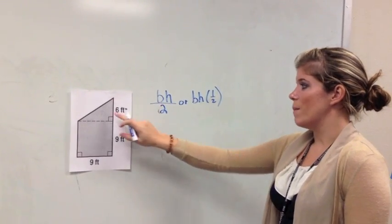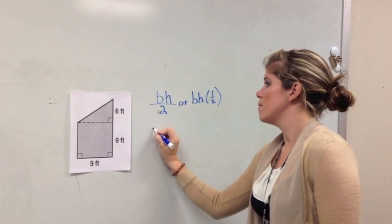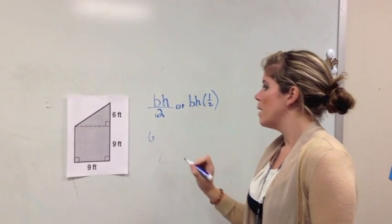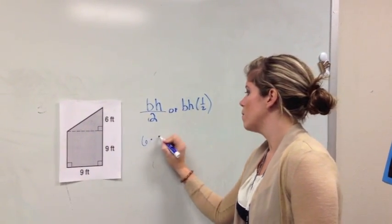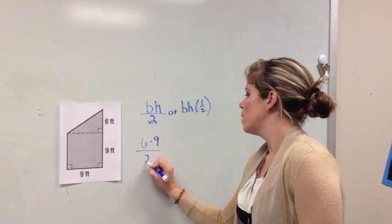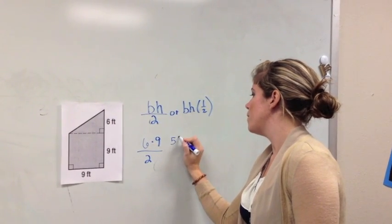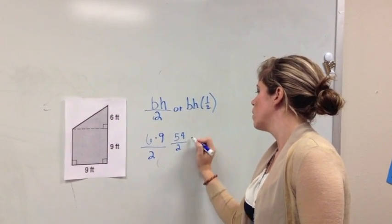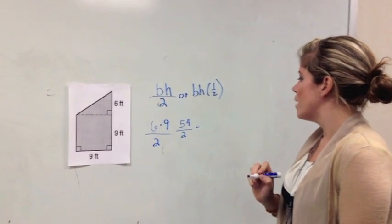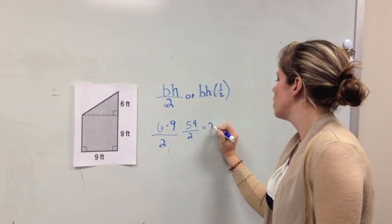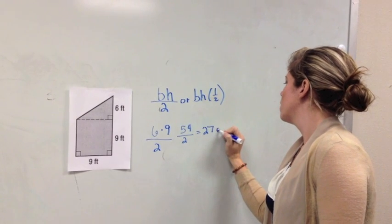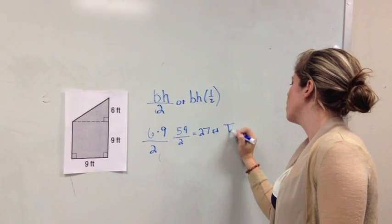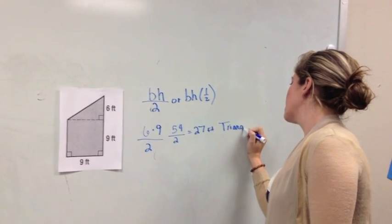Okay, so my base in my triangle, we see is 6 feet, and my height is 9 feet. Divide by 2, I get 54. Divide that by 2, and I get 27 feet for my triangle. Okay, that's step 1.